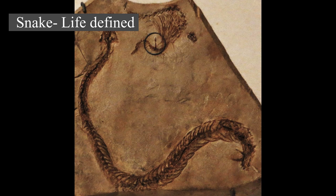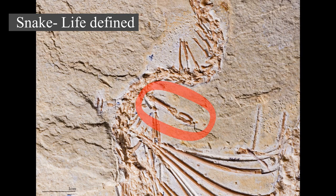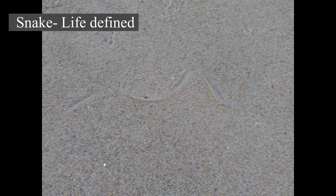Some species retain a pelvic girdle with a pair of vestigial claws on either side of the cloaca. Lizards have evolved elongate bodies without limbs or with greatly reduced limbs about 25 times independently via convergent evolution, leading to many lineages of legless lizards. These resemble snakes, but several common groups of legless lizards have eyelids and external ears, which snakes lack, although this rule is not universal — see amphisbaenians, dibamids, and paedophodids.